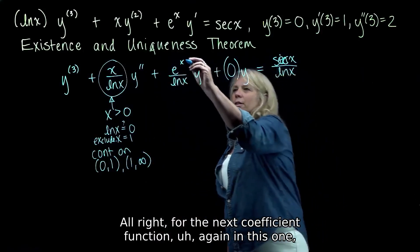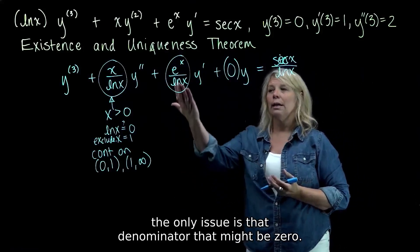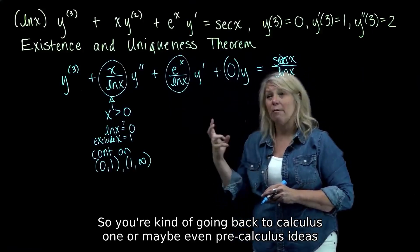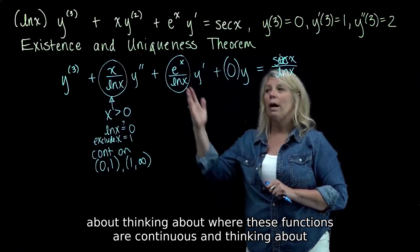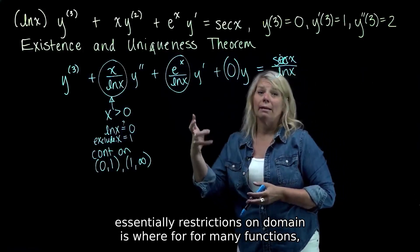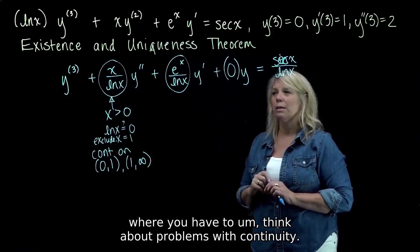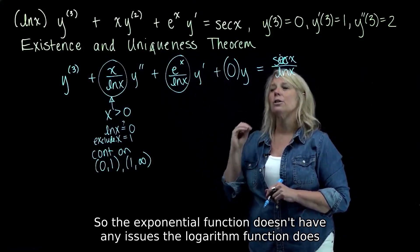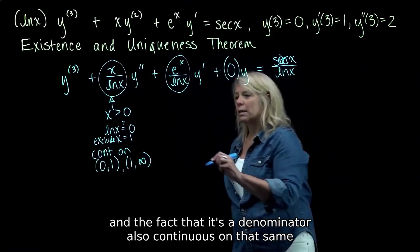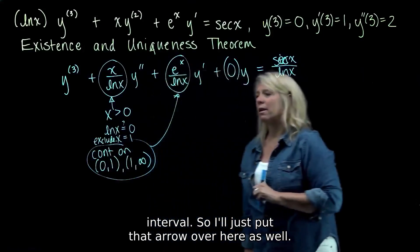For the next coefficient function, the only issue is again that denominator that might be 0. We're going back to calculus 1 or pre-calculus ideas about where functions are continuous — essentially restrictions on domain. The exponential function doesn't have any issues, but the logarithm function does, and the fact that it's in the denominator means this function is also continuous on that same interval.